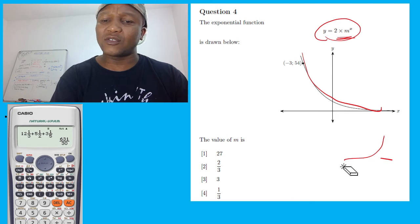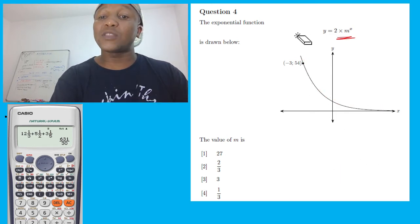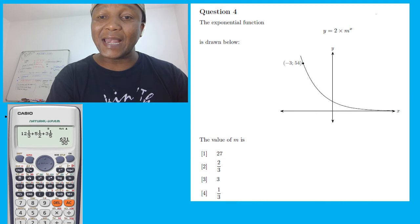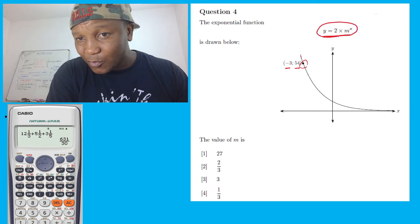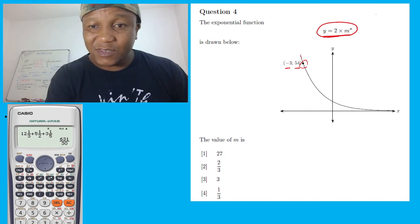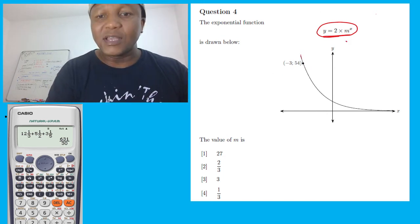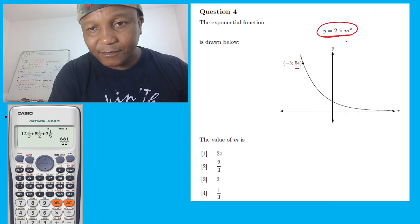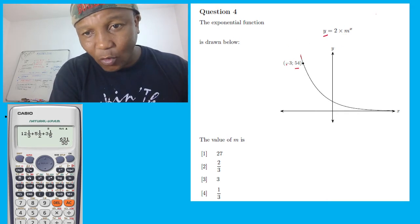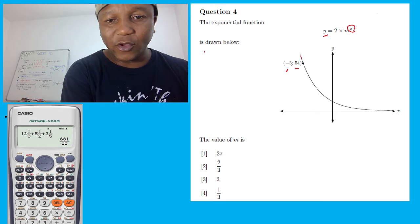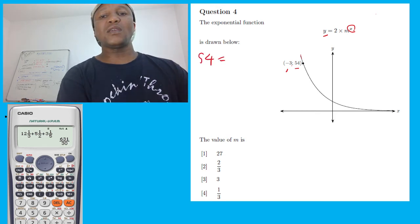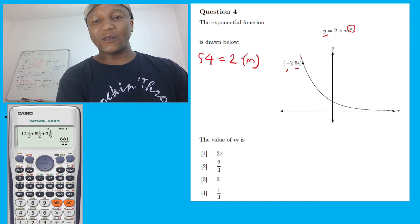Now let's go to the question — this is for beginners, for those who want to learn basics. This is X, this is Y. This coordinate lies on the exponential, which means we can substitute its value into the equation. So Y is going to be 54, and X is equal to negative 3. We're going to say Y equals 54, equal to 2 times M bracket, with X equal to negative 3.